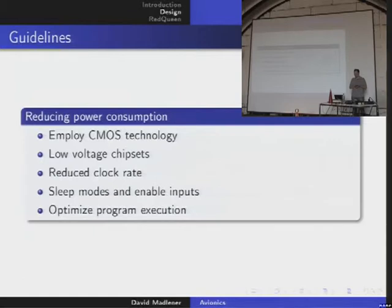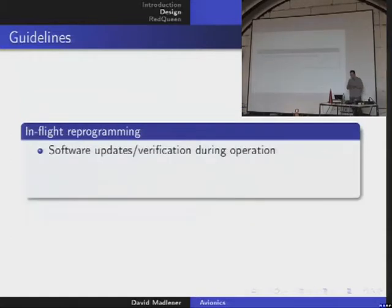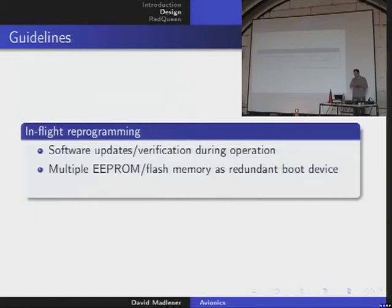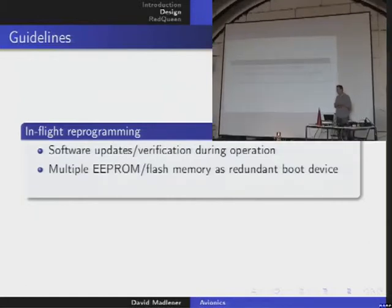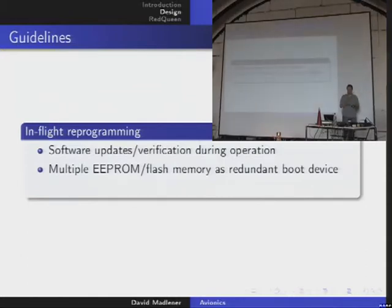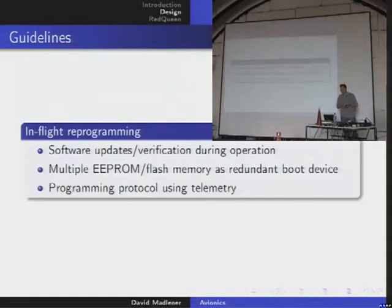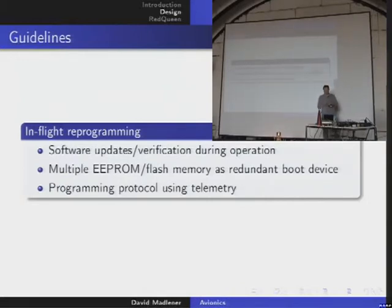For in-flight reprogramming, you should be able to make updates during flight. Normally you use multiple solid-state memory devices — you don't program the memory currently in use, but another one, and then switch to it. You have to think about a programming protocol that goes over telemetry, because you cannot get a cable to your device.